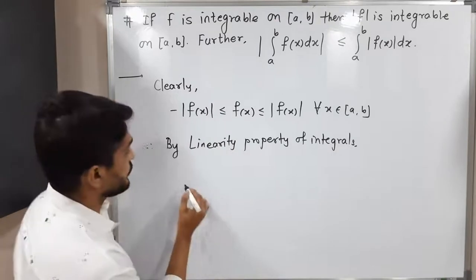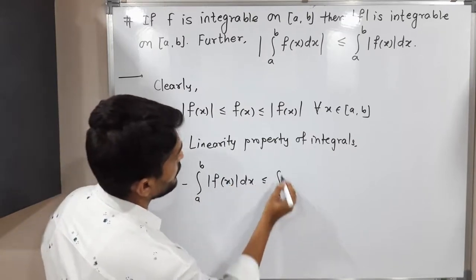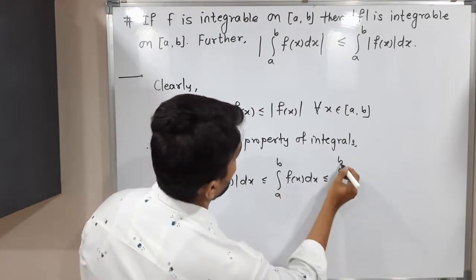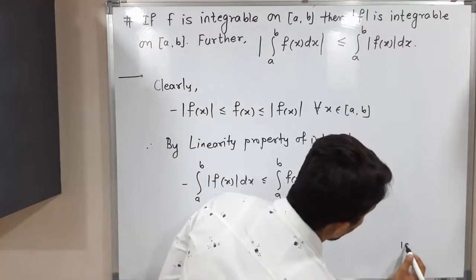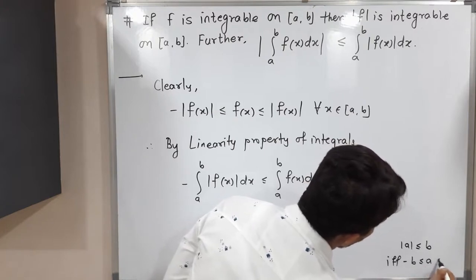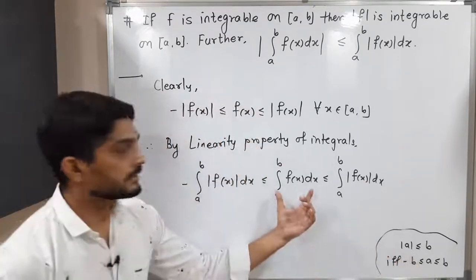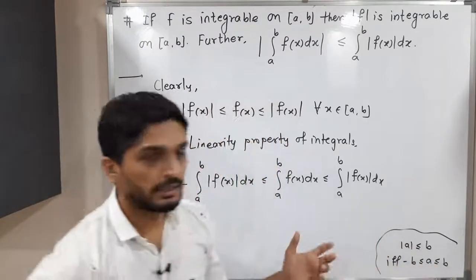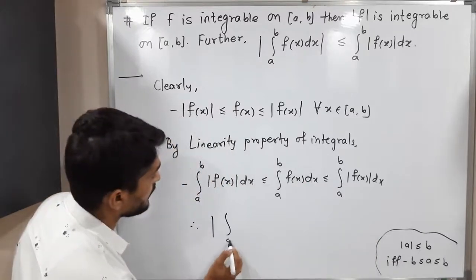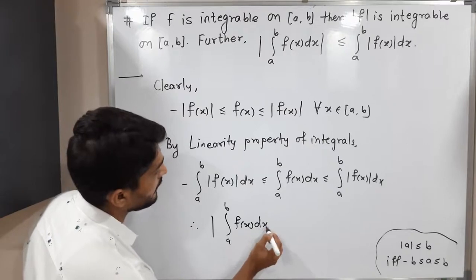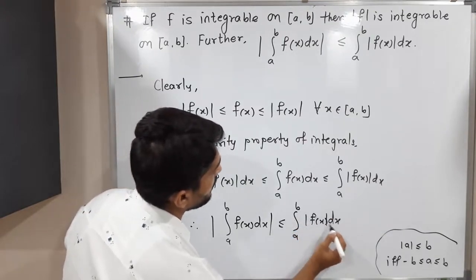By the linearity property of integrals, we can take integration of all sides and the same inequality will be maintained. So: −∫ₐᵇ |f(x)| dx ≤ ∫ₐᵇ f(x) dx ≤ ∫ₐᵇ |f(x)| dx. Now using the result |a| ≤ b if and only if −b ≤ a ≤ b — here the middle integral is our 'a' and the last integral ∫ₐᵇ |f(x)| dx is our 'b'. Applying this result: |∫ₐᵇ f(x) dx| ≤ ∫ₐᵇ |f(x)| dx.